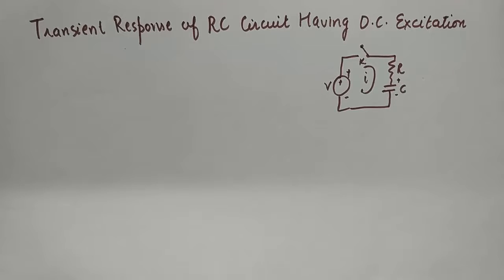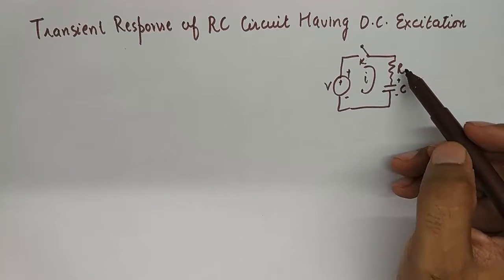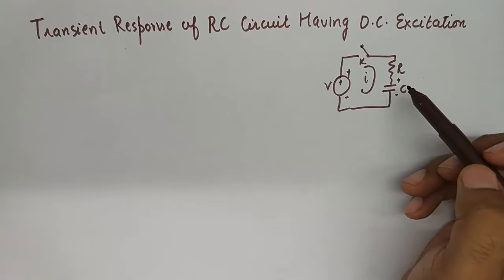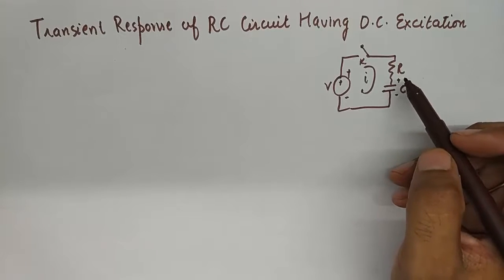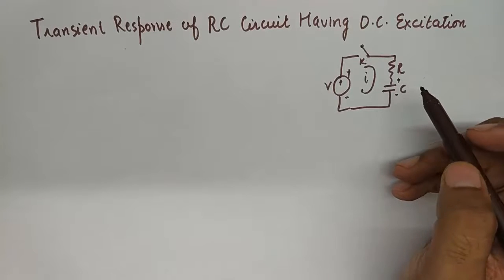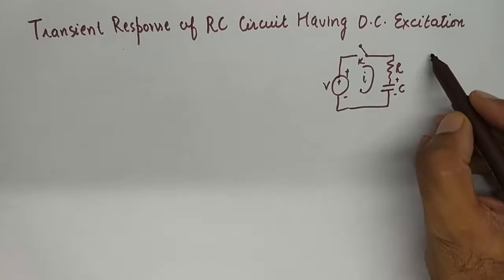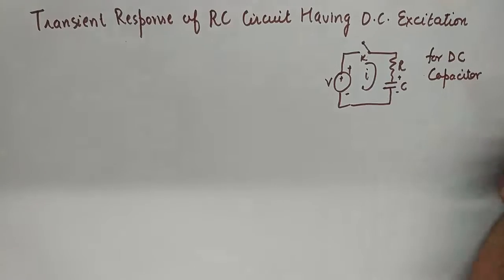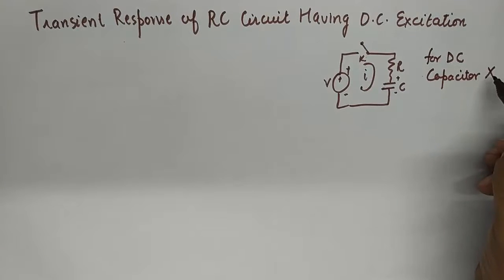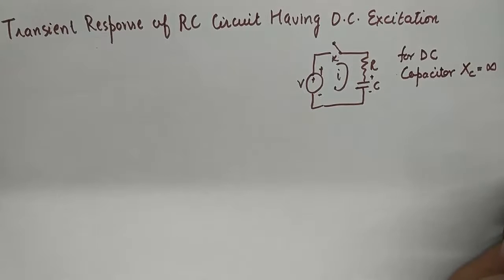Now in this circuit where we have a DC voltage source connected to R and C in series, we will eventually say that no current will flow in this circuit after a certain amount of time. Or we can also say that for DC capacitor is going to offer infinite reactance.